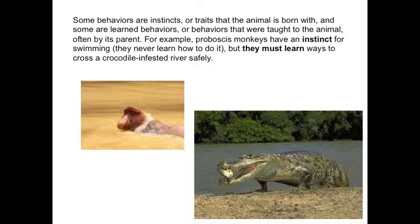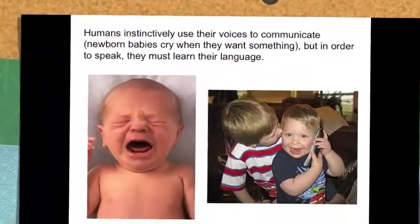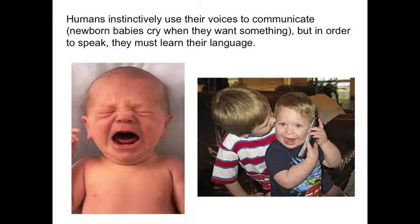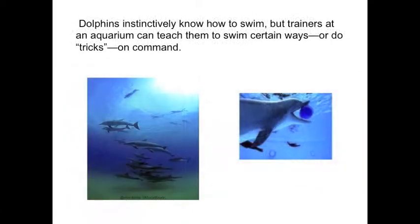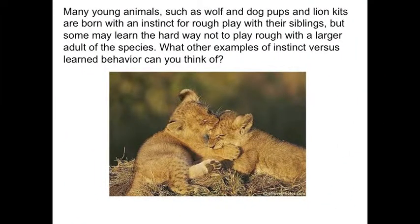For example, the proboscis monkey has an instinct to swim. Many animals instinctively know how to swim, but trainers at an aquarium can teach them to swim certain ways or do tricks on command. Many young animals such as wolf and dog pups and lion kits are born with an instinct for rough play with their siblings, but some may learn the hard way not to play rough with a larger adult of the species.